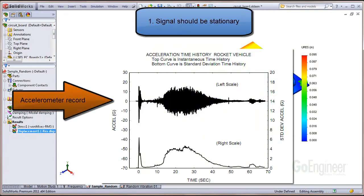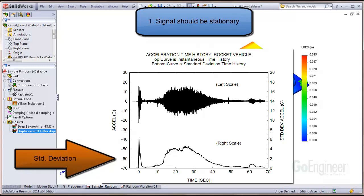This graph of acceleration time history shows a non-stationary signal. The signal is taken from accelerometers of a rocket launch. Below it is a graph of the standard deviation of the same signal. You can see the standard deviation changes from launch, to stage separation, then another burn, for example.